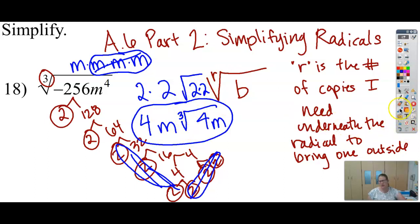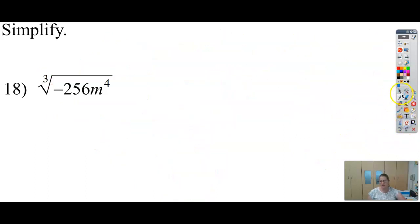Okay, so let's try something a little bit different. Let's try another example. Okay, so here's a 5th root. Now if it's a 5th root, that means I need 5 copies of a number in order to bring 1 out. So let's go ahead and break down 160.